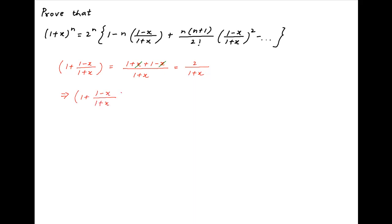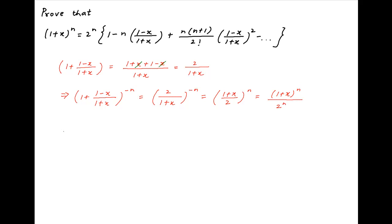Now raise both sides to the power minus n. Therefore, 1 plus (1 minus x) upon (1 plus x), raised to the power minus n, is equal to 2 upon (1 plus x) raised to the power minus n, which can be written as (1 plus x) upon 2, raised to the power n, which in turn is equal to (1 plus x)^n upon 2^n.